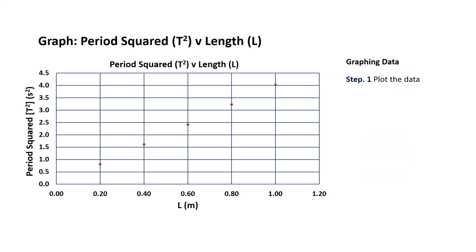Let's now move on to the graphing. Step number one we want to plot the data. I've got my period squared in seconds squared on the vertical axis and the length of pendulum in meters on the horizontal axis. Step number two is to add a trend line, and step number three is to add a linear equation.